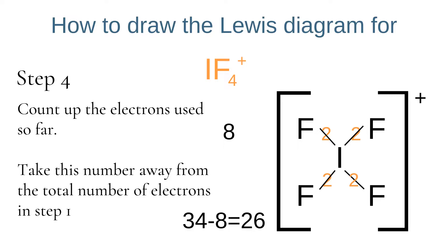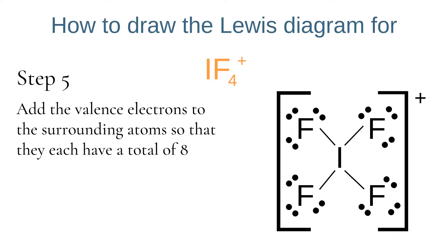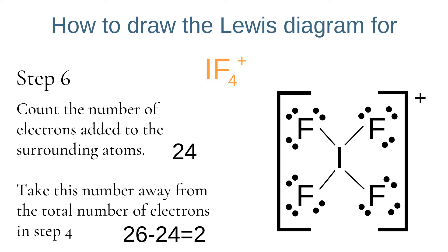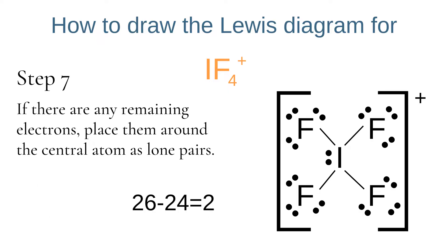Each of the 4 single bonds represents 2 electrons, so we've used 8 electrons. Taking this from our total of 34 leaves 26. We add lone pairs to the surrounding fluorine atoms — each already has 2 electrons from the bond, so we add another 6 to each. 6 times 4 is 24, and 26 minus 24 is 2, meaning we still have 2 more electrons to add. We add any remaining electrons to the central atom, so we add 1 lone pair to iodine.